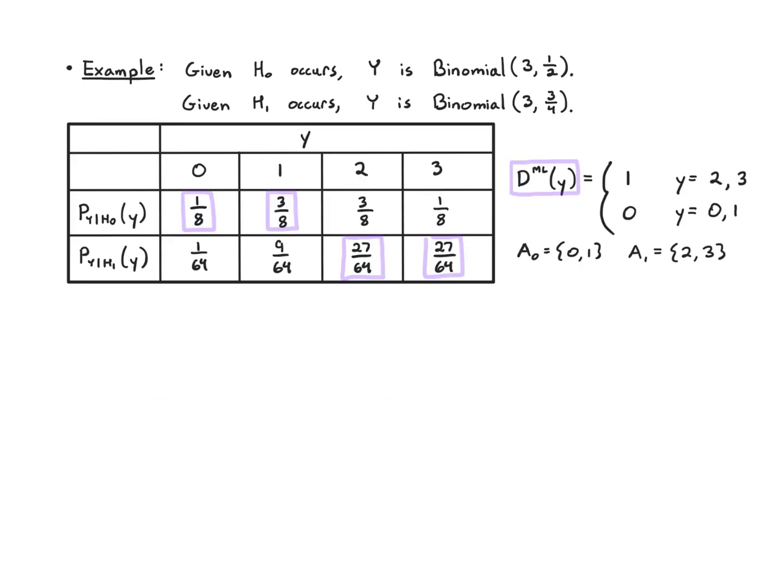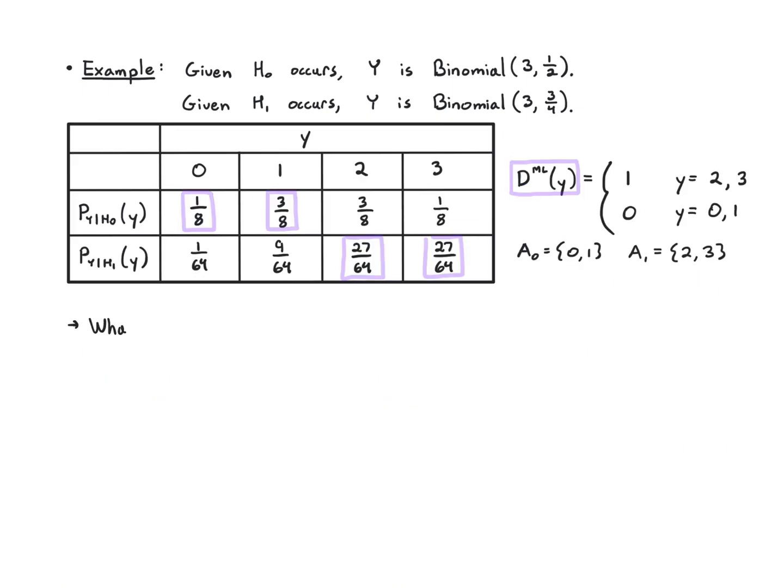With that in mind, let's figure out what is the probability of error for this decision rule. Now I know that when y equals 0 and 1, I'm going to say 0, and when it's 2 or 3, I'm going to say 1. What's the chance I make an error when I'm doing that?